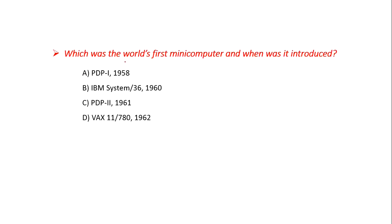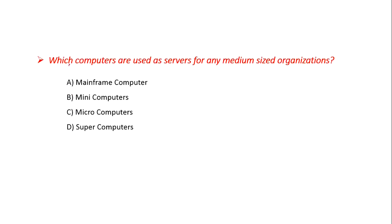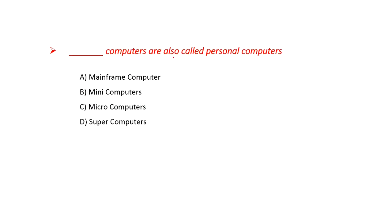Which was the world's first mini computer and when was it introduced? Option A: PDP-1 1958, B: IBM System 360 1960, C: PDP-2 in 1961, D: VAX-11 780 in 1962. The answer is A: PDP-1 in 1958. Which computers are used as servers for any medium-sized organization? Option A: Mainframe, B: Mini Computer, C: Micro Computer, D: Super Computer. The answer is B: Mini Computers — they are used as servers in medium-sized organizations.